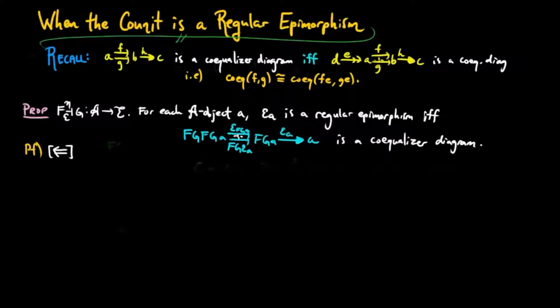The reverse direction is trivial by definition of a regular epimorphism. In the forward direction, we need to verify the universal mapping property of epsilon A as a co-equalizer of epsilon FGA and FG epsilon A.